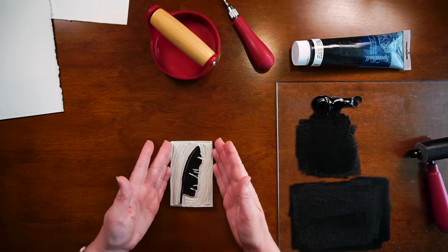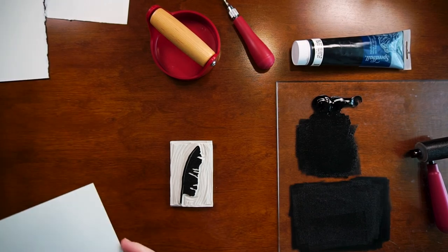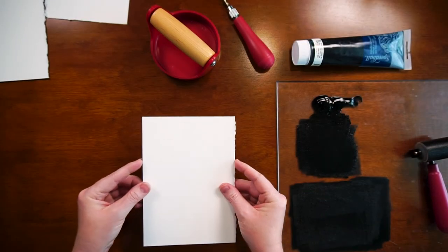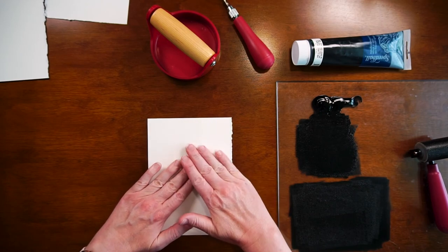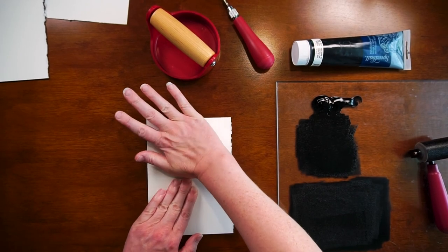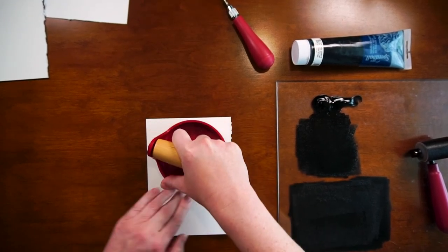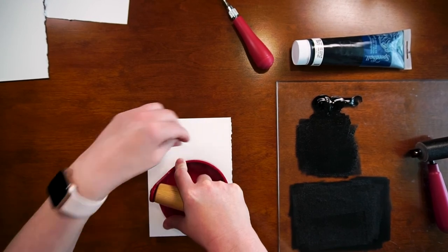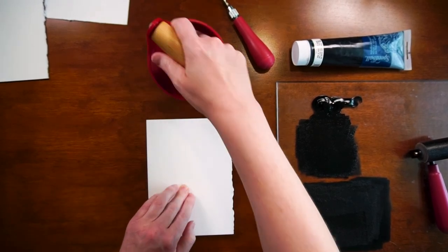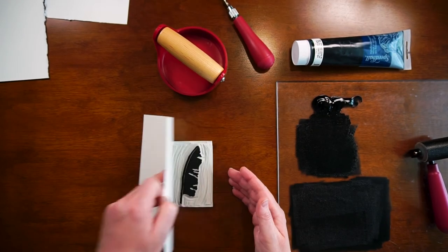So now set this down. I want it kind of straight because once you put your piece of paper over top of it you can't see where it actually is. So you just kind of have to go by feel. So set it down again, make sure that you're not twisting it, and take your baron.